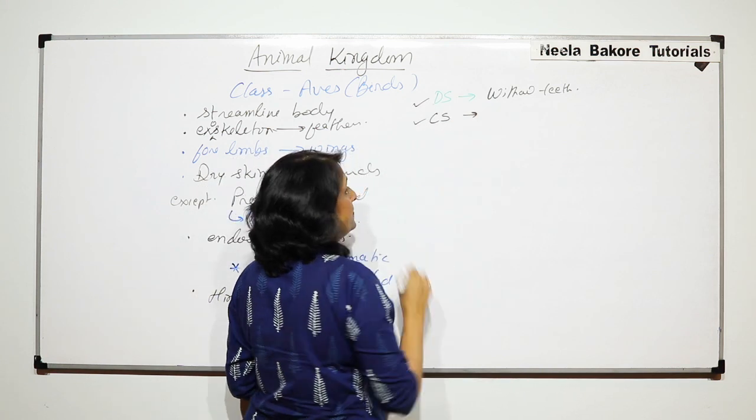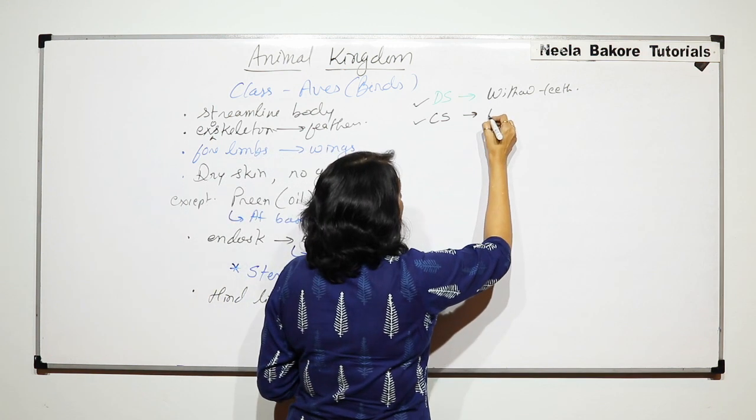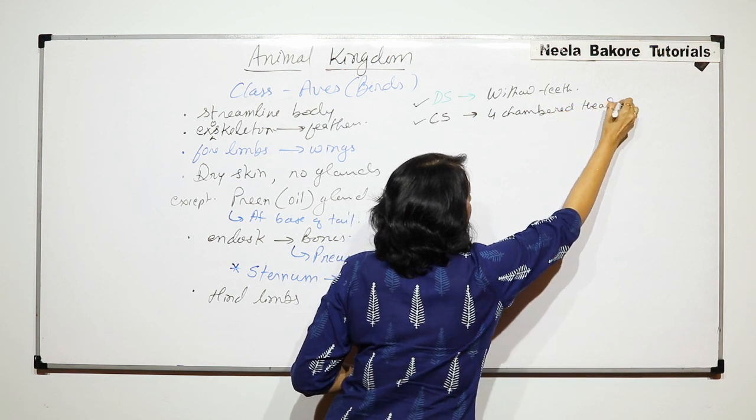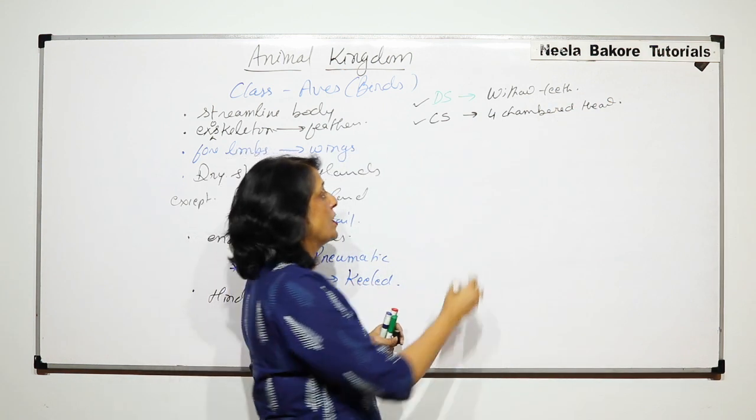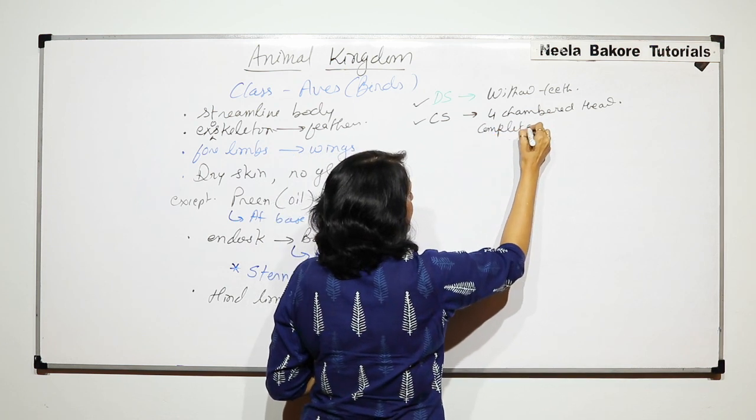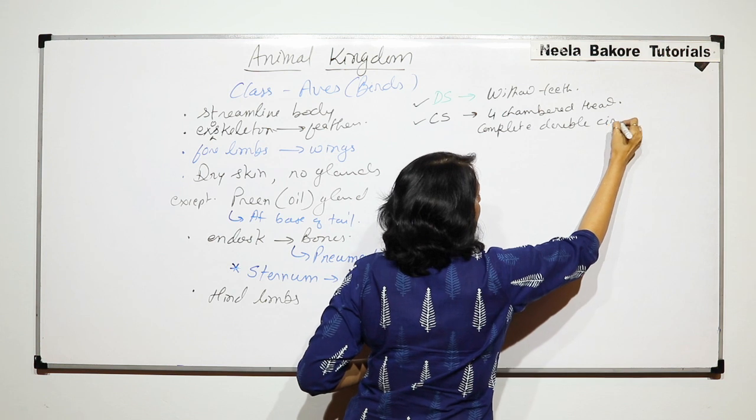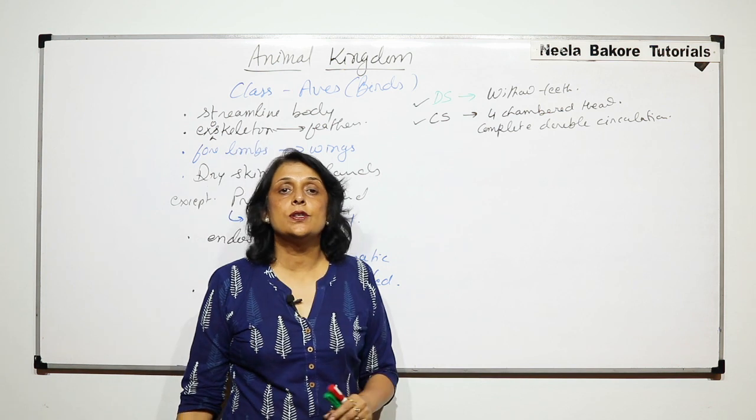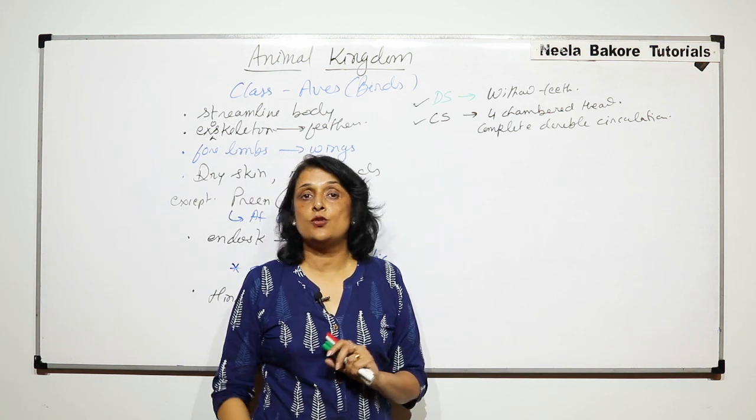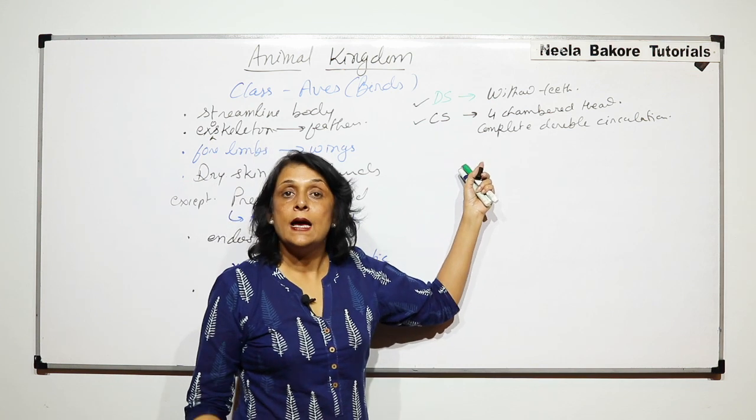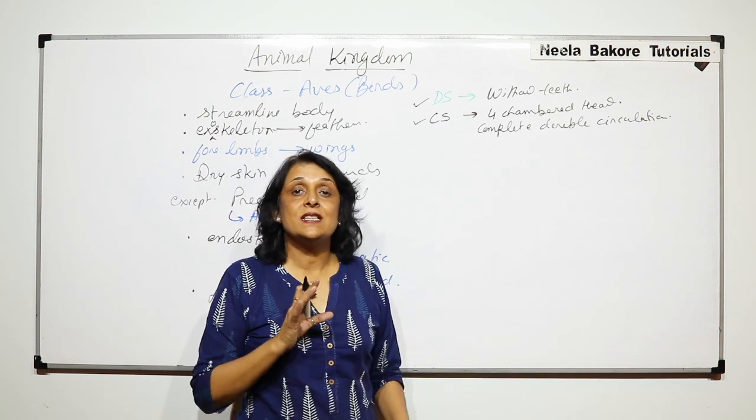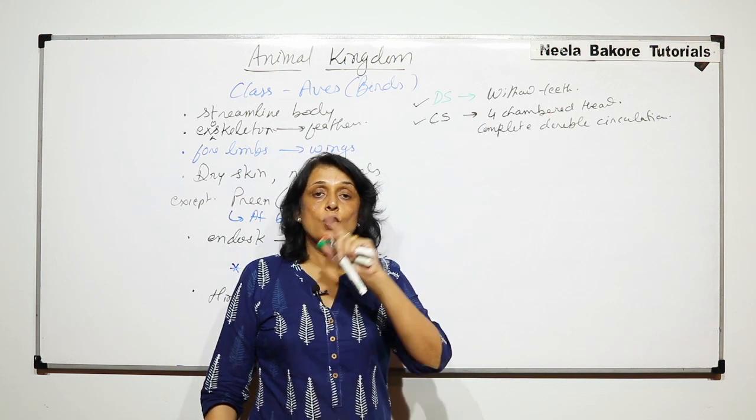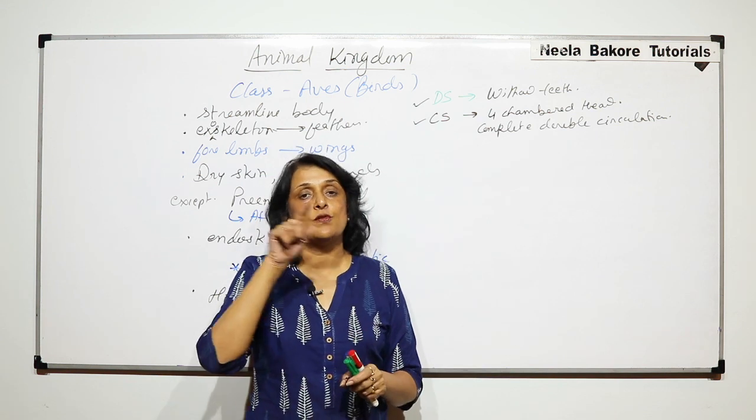Circulatory system, they have proper four chambered heart and there is complete double circulation. Complete double circulation means the oxygenated and deoxygenated blood is completely separated. There is no mixing. So it is a very efficient heart. Our heart and the heart of birds is pretty much same, only difference: in our case the aorta or the systemic arch goes from the left side whereas in case of birds it goes from the right side.